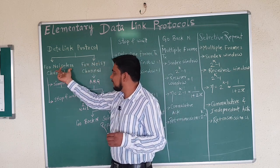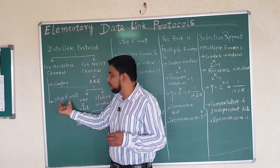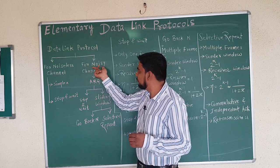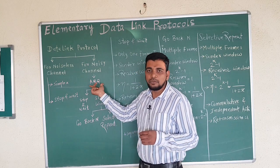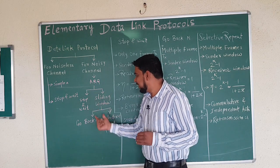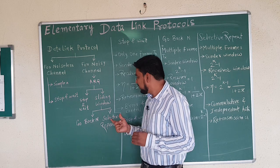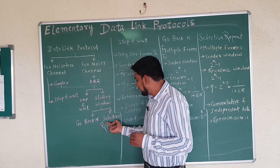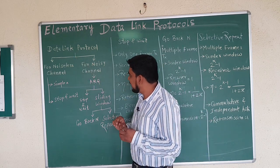Noiseless channel has two types: simplex protocol and stop-and-wait protocol. For noisy channel — where the probability of noise is high — we use ARQ, that is Automatic Repeat Request. ARQ has two categories: stop-and-wait, and sliding window. Sliding window is again classified into two: Go-Back-N protocol and Selective Repeat protocol. These are the protocols used in the data link layer.